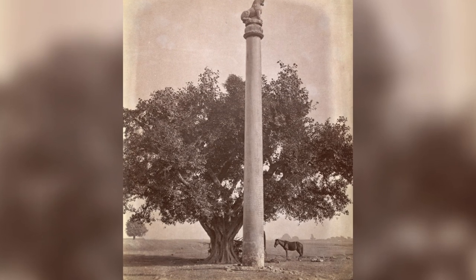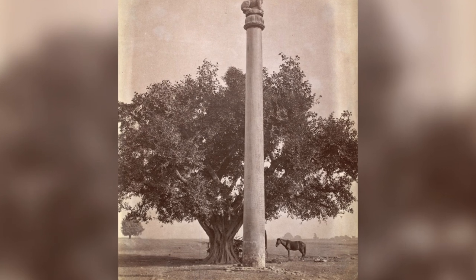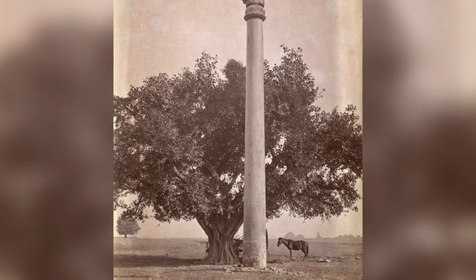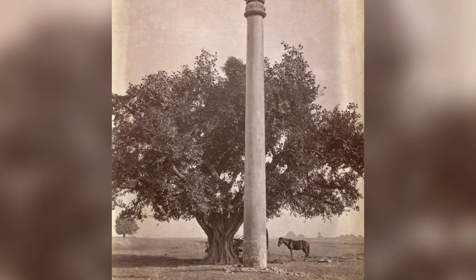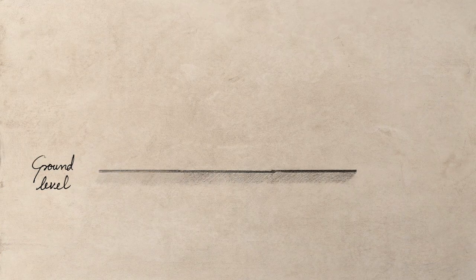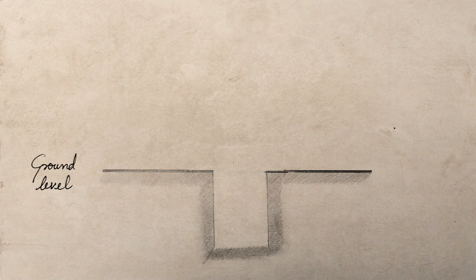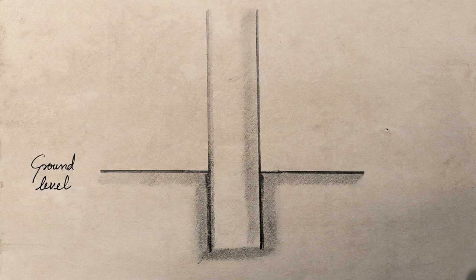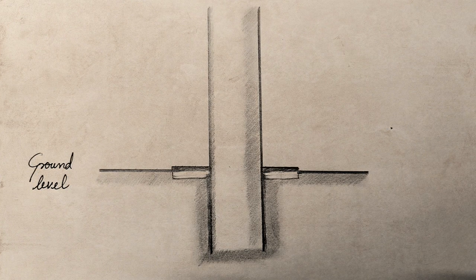The initial stages of erecting these pillars were not different from how pillars were erected before the Mauryan period. The Mauryan engineers adopted the same technique used to erect wooden pillars: a hole was dug, the pillar was placed in the hole, and finally the hole was filled. On the surface, a brick platform was also constructed, which provided some stability to the pillar.